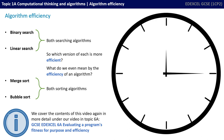Talking about the efficiency of an algorithm is actually quite a complex process, and we look at this in depth in the later half of the video when we go beyond the GCSE specification. But from the point of view of your exam, we're simply meaning which algorithm is typically quicker at performing a task on a data set.